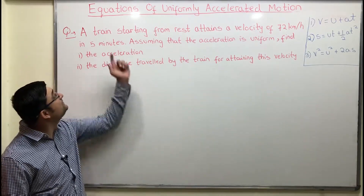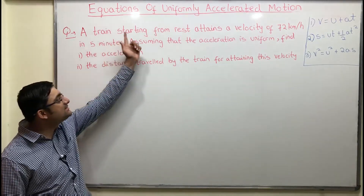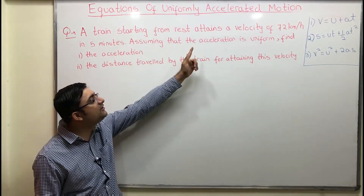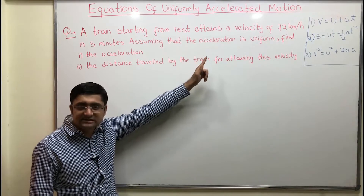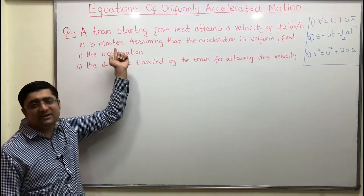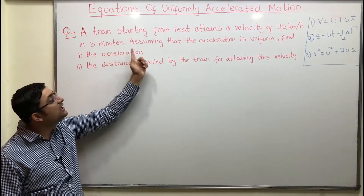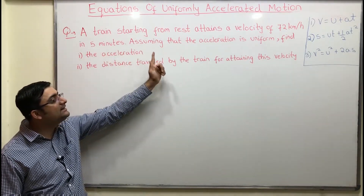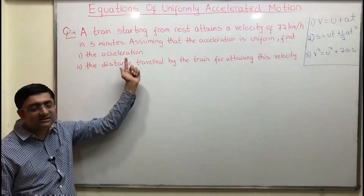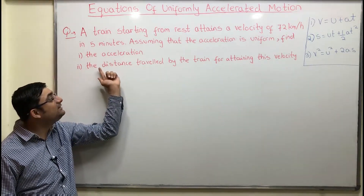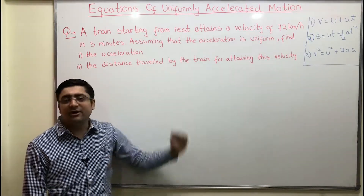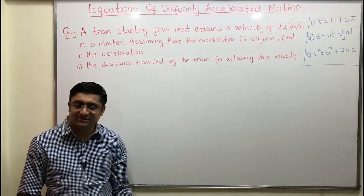Let's read the question. A train starting from rest attains a velocity of 72 kilometers per hour in 5 minutes. Assuming that the acceleration is uniform, find part 1 the acceleration, and part 2 the distance traveled by the train for attaining this velocity.